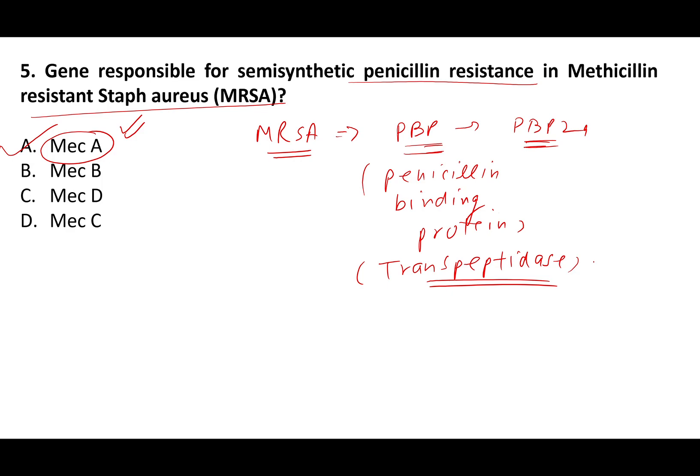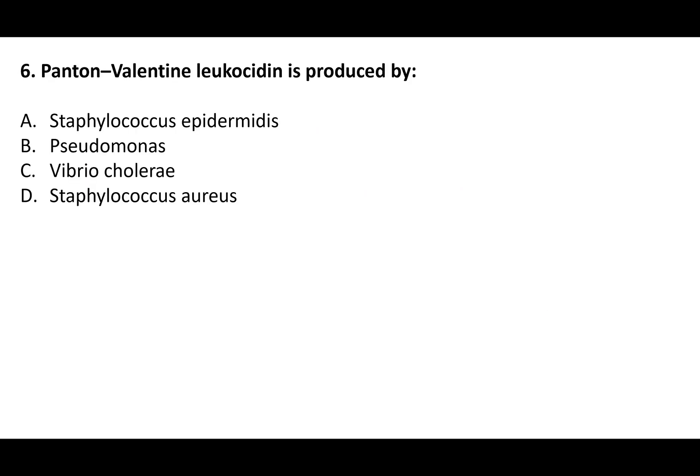Panton-Valentine Leukocidin (PVL) is produced by Staphylococcus aureus — answer is option D. PVL is a toxin that kills leukocytes.